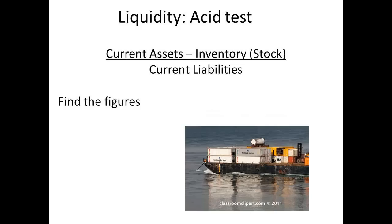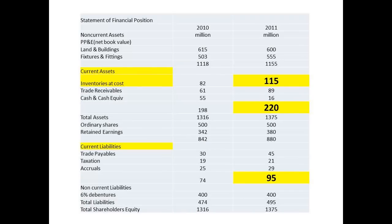The acid test for liquidity is to take the result of current assets less inventory and to divide this by current liabilities. These figures are found on the balance sheet: current assets are £220 million, inventory at cost is £115 million, and current liabilities are £95 million.